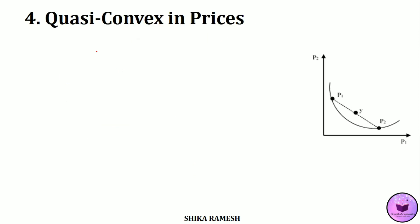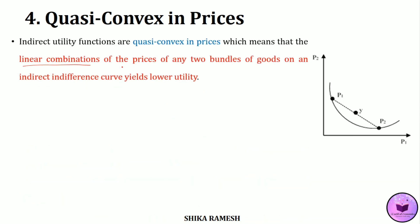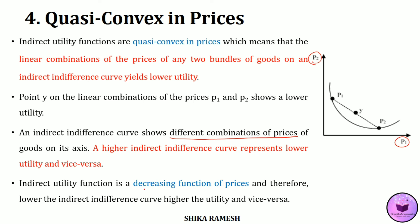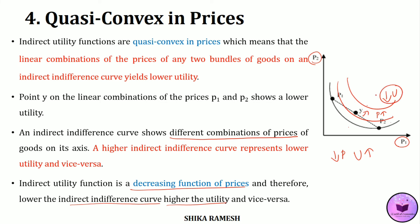The fourth property is that the Indirect Utility Function is quasi-convex in prices. This means that linear combinations of the prices of any two bundles of goods on an indirect indifference curve will yield a lower utility. An indirect indifference curve shows various combinations of prices of goods on its axes — the prices of good x1 and x2 are represented on the x-axis and y-axis. Since the Indirect Utility Function is a decreasing function of prices, a lower indirect indifference curve represents higher utility. As the indifference curve shifts upward, prices of both goods increase, decreasing consumer utility. Hence, higher indirect indifference curves correspond to lower utility.